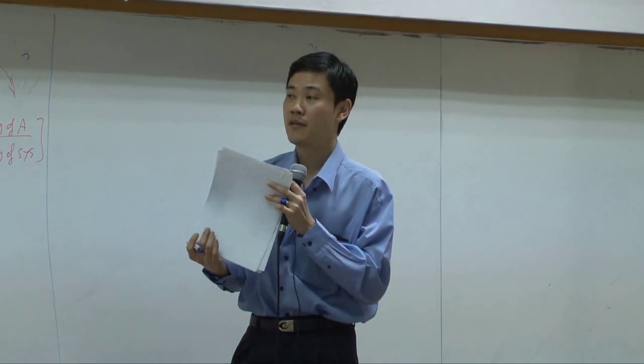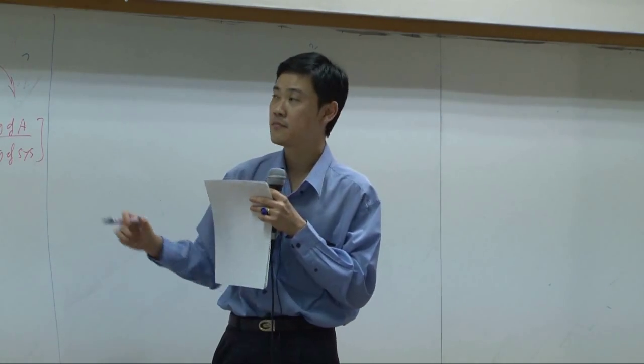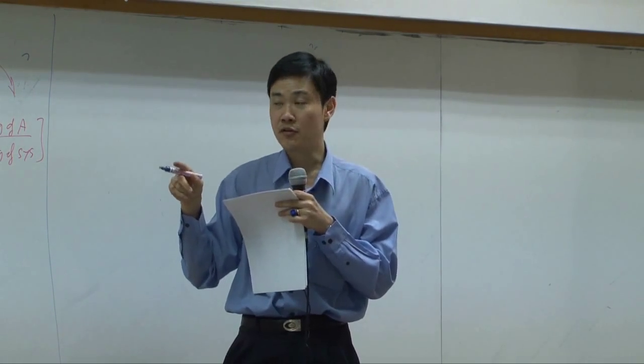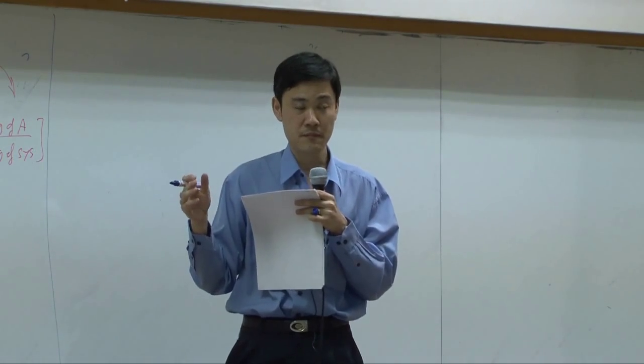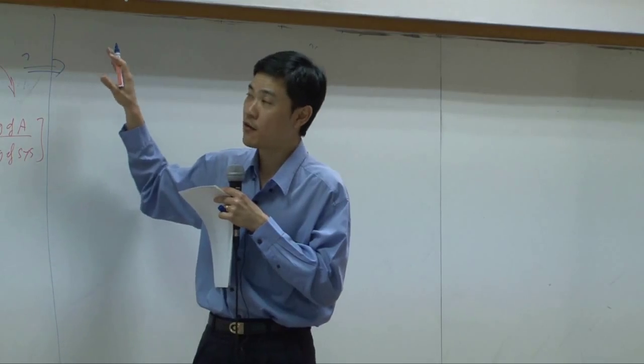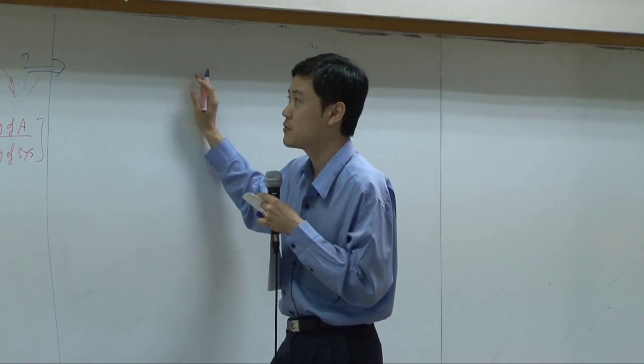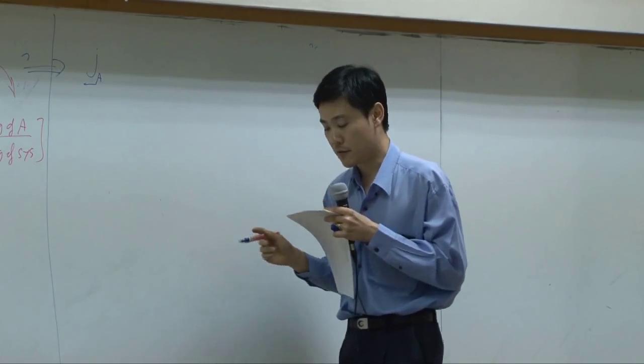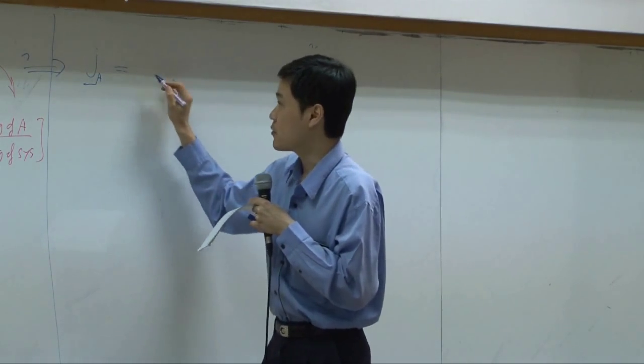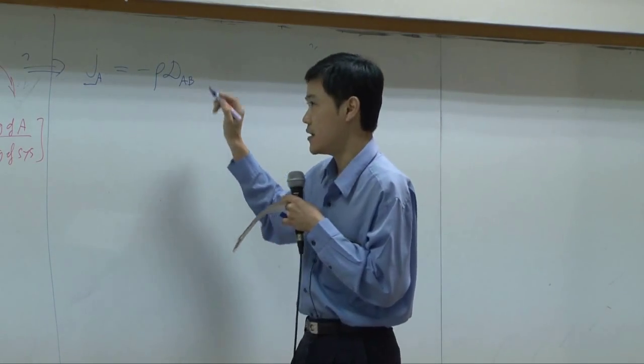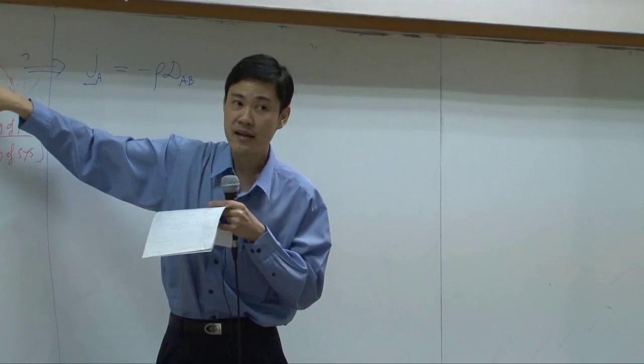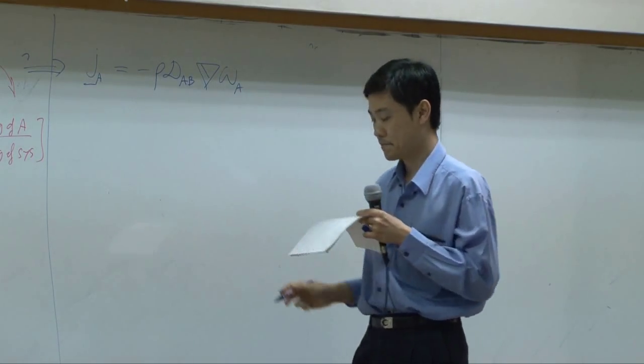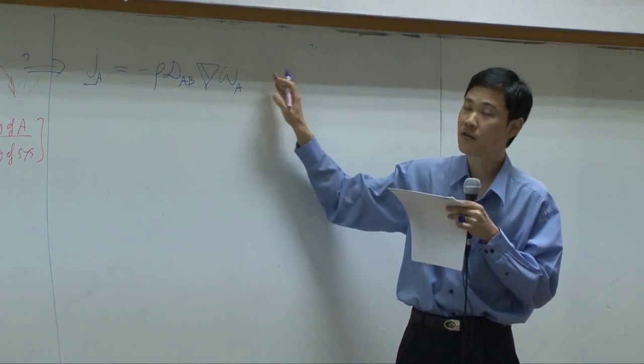From this equation, again, just like last time, we derive it from one-dimensional system. Of course, in reality, when you use it, it can be applied to three-dimensional. So in order for us to convert one-dimensional equation into three-dimensional equation, we use vector notation. So JA can be represented as vector, supposed to equal to minus rho DAB. D omega A by DY, when you turn into vector, you get del omega A. That's Fick's law for three-dimension.